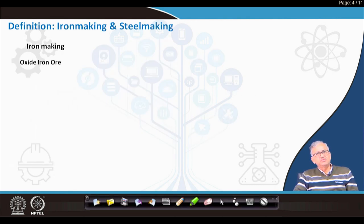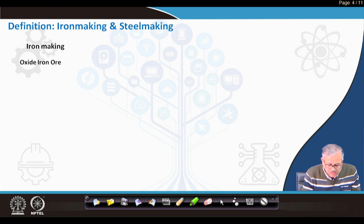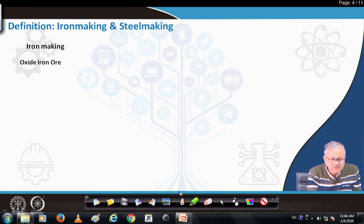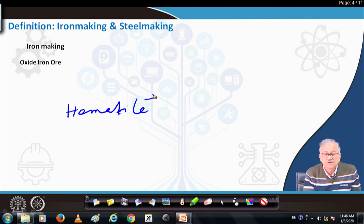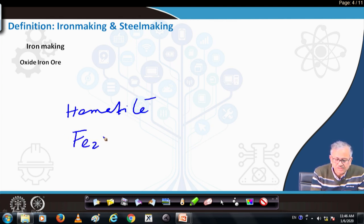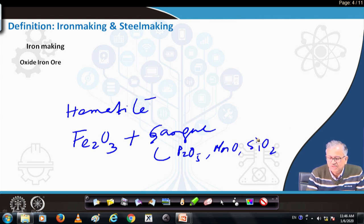Now let us talk about the basic definition of iron making and steel making. In iron making, we start with iron ore. The richest ores of iron are oxide in nature. Two major oxide ores exist: one is hematite and another is magnetite. In hematite, the mineralogy is basically Fe2O3 plus gangue.